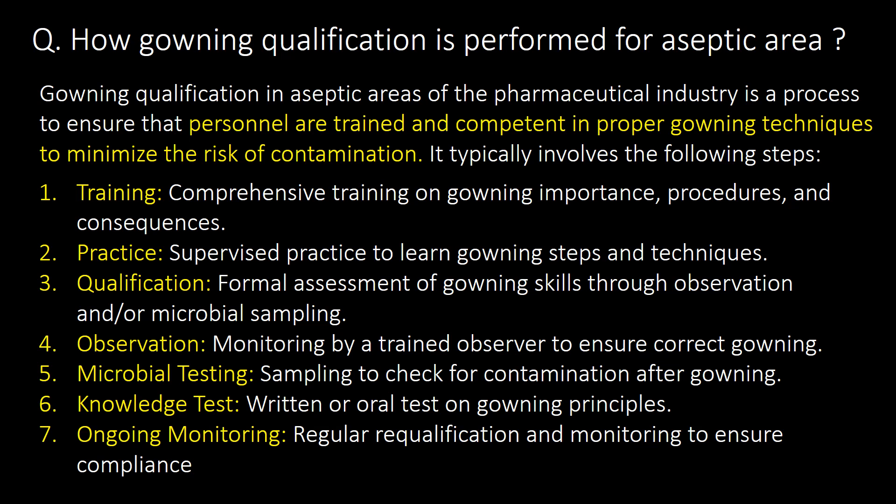How is gowning qualification performed for aseptic areas? Gowning qualification in aseptic areas of the pharmaceutical industry is a process to ensure that personnel are trained and competent in proper gowning techniques to minimize the risk of contamination. It typically involves the following 7 steps: 1. Training, 2. Practice, 3. Qualification, 4. Observation, 5. Microbial testing, 6. Knowledge test, 7. Ongoing monitoring.